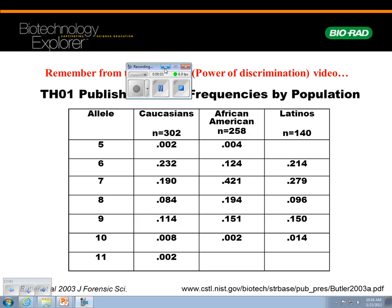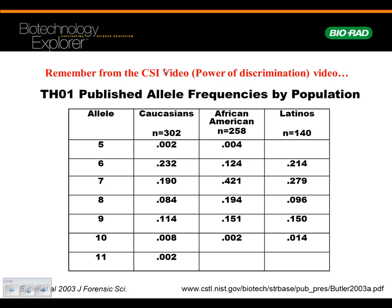This is part two of the PV92 video series. The first slide here is from the video where we talked about the crime scene investigators, where we talked about the power of discrimination. We had this table where it was given to you — data collected by other people. Here's the link down here. This would be for allele 5 in Caucasians — what's the frequency of a Caucasian having it?